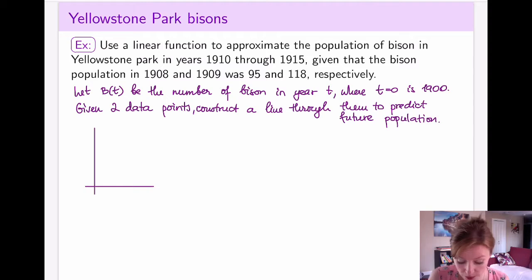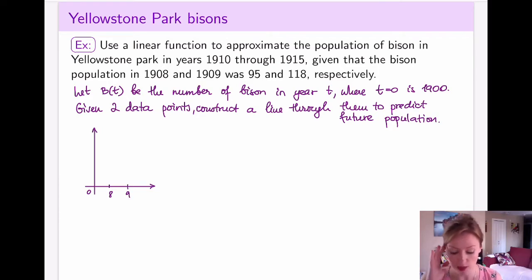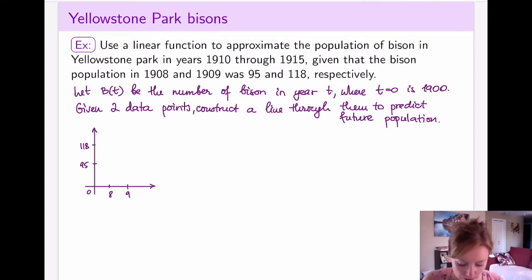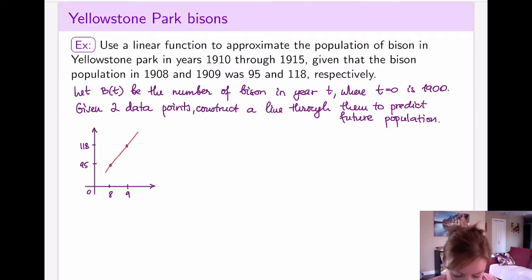If it is possible to draw a picture, I always strongly recommend drawing something because it will give you another way to visualize the information that you're given. The countdown starts at zero. I know the population in years 1908 and 1909, and it is 95 and then 118. So I have these two points that are actually given to me — I know that it's the exact population in those years.